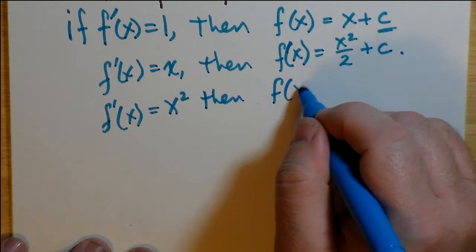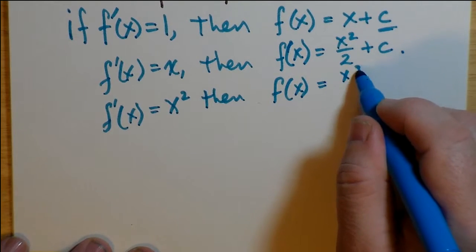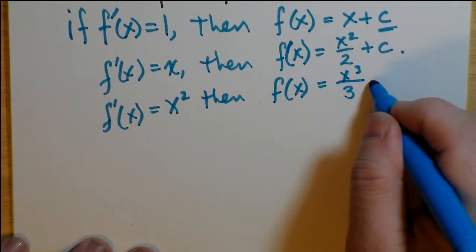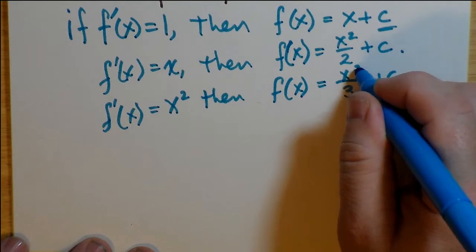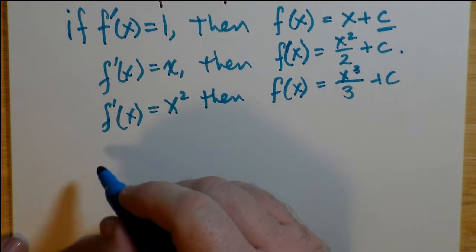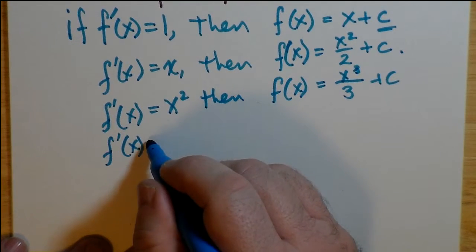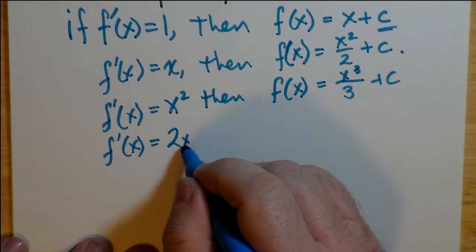And then, once again, you add a constant, because the original function could have had any constant added to it, because its derivative goes to 0 anyway. And similarly, if f'(x) is x squared, then x cubed divided by 3 plus c would be the anti-derivative.